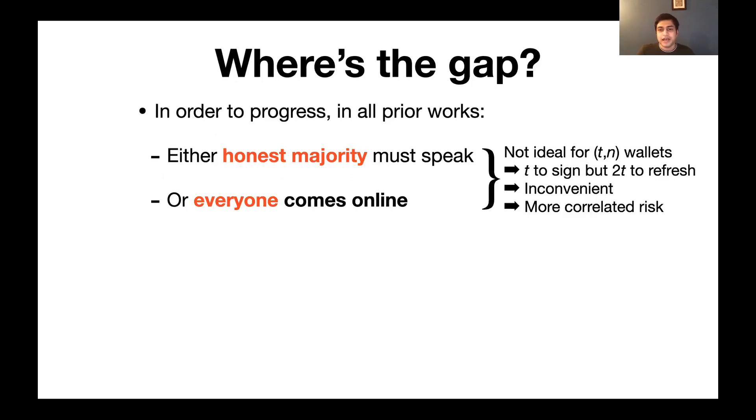For instance, if we have the system configured to have T people sign, but twice as many to refresh, this could be inconvenient, because there's a reason that the parameter T was chosen to begin with. It also induces more risk, because now that the attacker knows that all the devices in the system, or two T devices in the system, are going to come online at the same time every day, it could introduce a new attack surface.